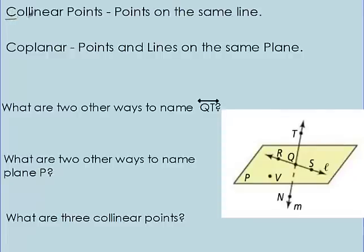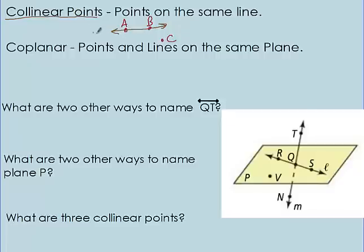Collinear points — points that are on the same line. If I have a line here with two arrowheads, and I put two points on it — point A and point B — point A and B are collinear. But if we had another point C out here, C is not collinear with A and B because it's not on the same line. However, if you have a point D out here, that would be collinear because if you extended this line, it goes straight through D. So D, A, and B are collinear; C is not collinear with the rest.